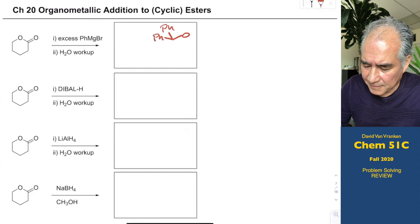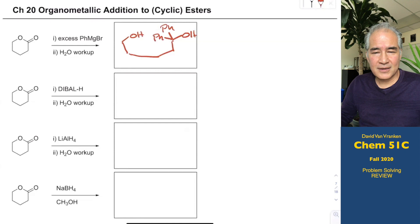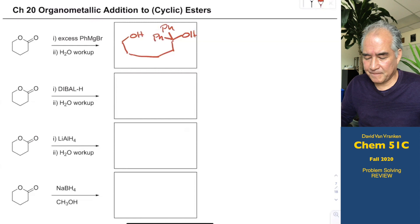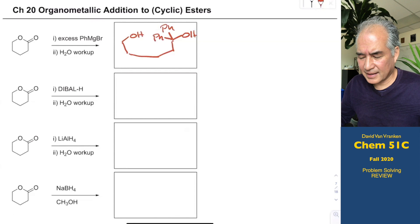After the workup, that gets protonated. What happens to the other piece — the other alcohol piece? It's attached. It doesn't go anywhere; it's attached by a four-carbon chain to that carbonyl group. You have to remember to draw that attached through a four-carbon chain to wherever the ester carbonyl was. It gets a little confusing if you haven't practiced using cyclic substrates.